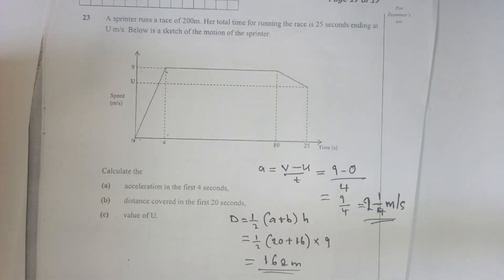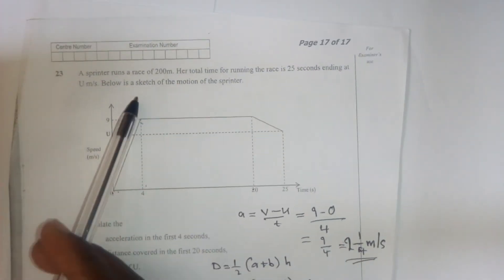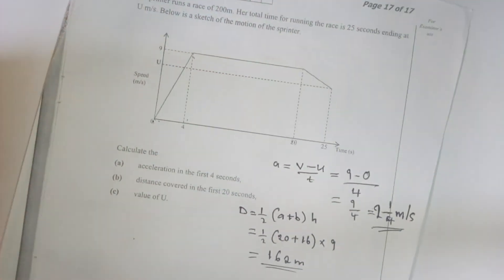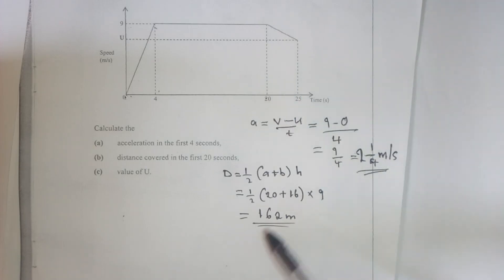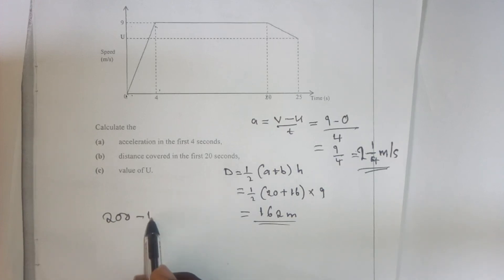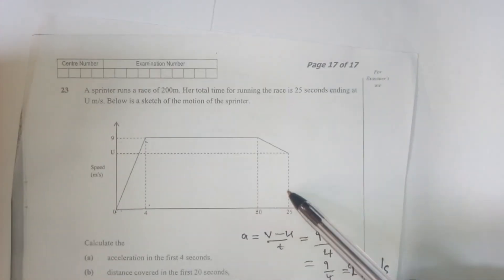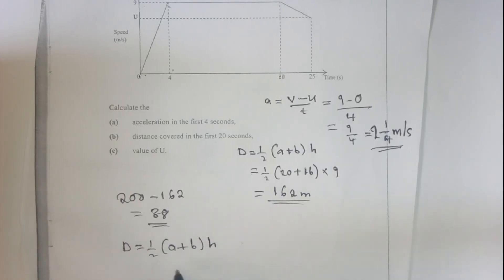Next we find the value of u. The total distance is 200 meters. We first find the distance covered in the last five seconds: 200 minus 162 equals 38 meters. So the distance for the last five seconds is 38 meters.